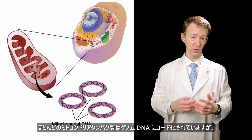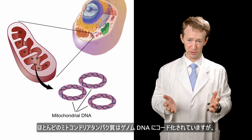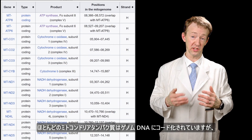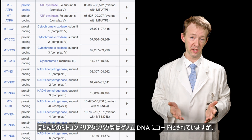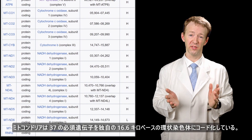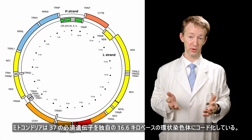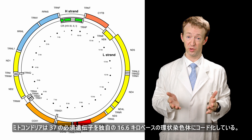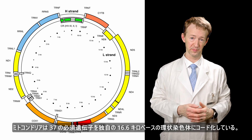While most mitochondrial proteins are encoded in the genomic DNA, mitochondria encode 37 essential genes in their own 16.6 kilobase circular chromosome.